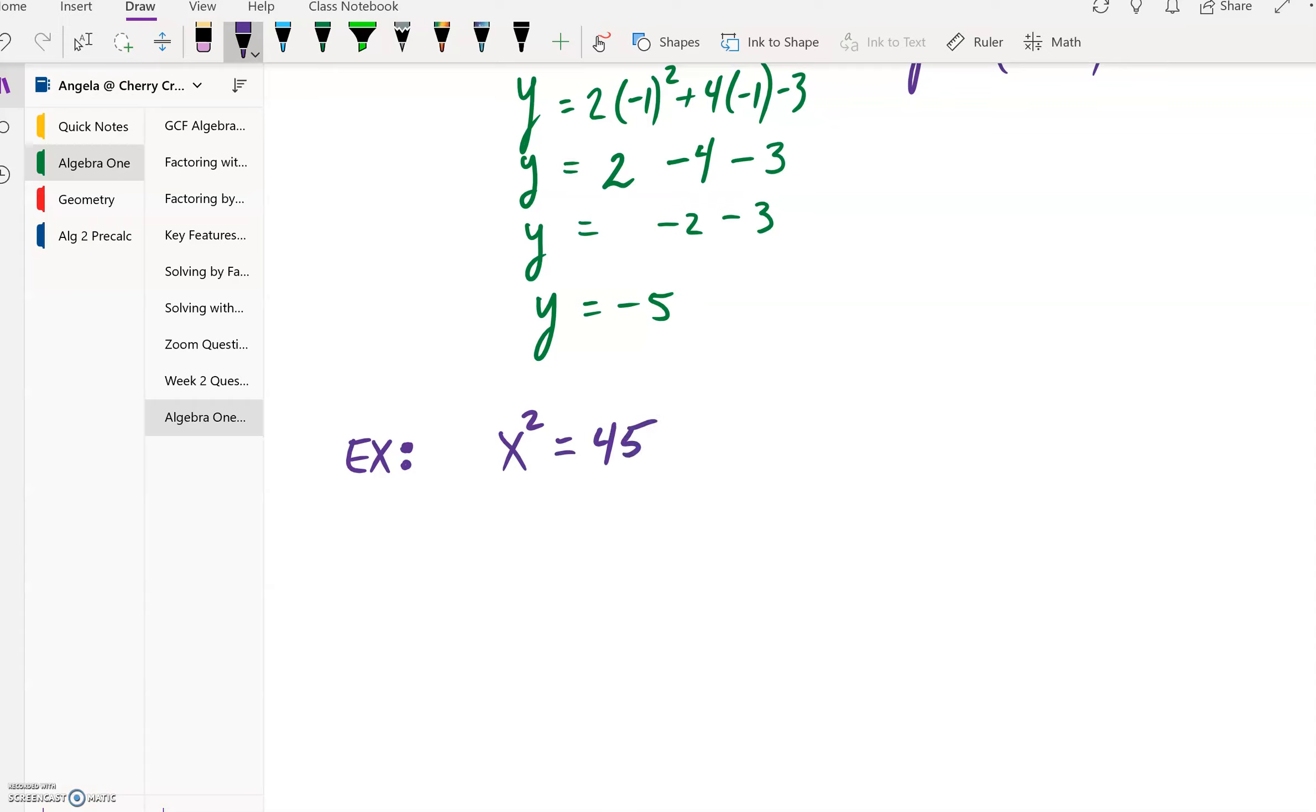So it's x² = 45, and when you want to get x by itself, we're taking the square root of both sides, and we get x = ±√45.